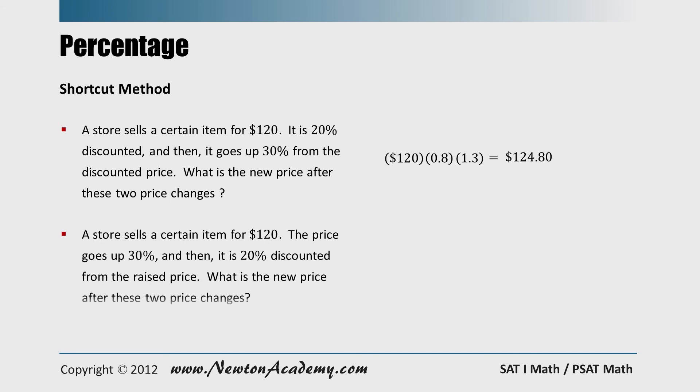Let's look at this question. A store sells a certain item for $120, the price goes up 30 percent, and then it is 20 percent discounted from the raised price. What's the new price after these two price changes? Well, the only difference in this problem is the order is switched. We have a price increase and then a price discount. So 120 times 1.3 gives you the raised price, and then it is 20 percent discounted off this raised price. So you multiply this whole thing by 0.8, and we have $124.80. Notice here that we have the same result. The order of discount and raise does not matter for the final price.